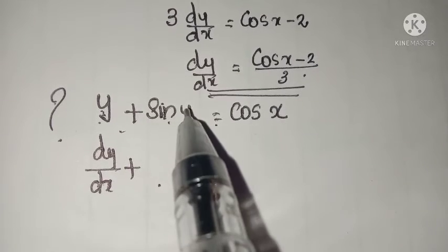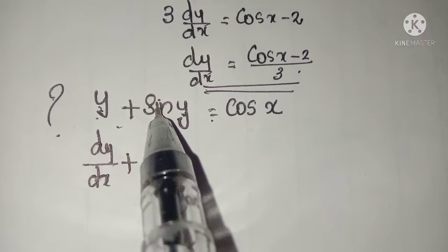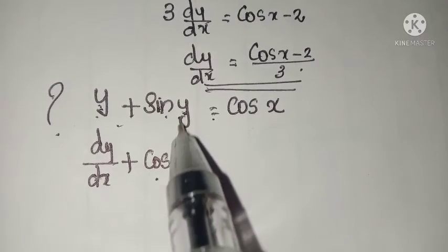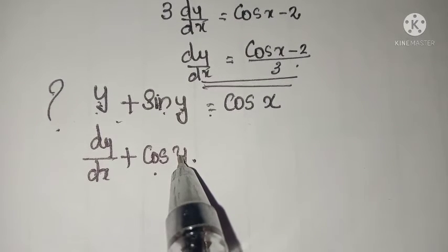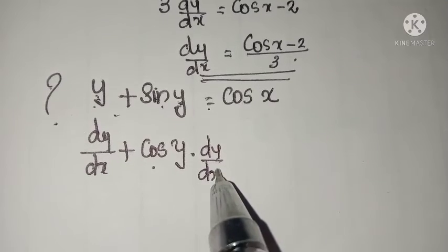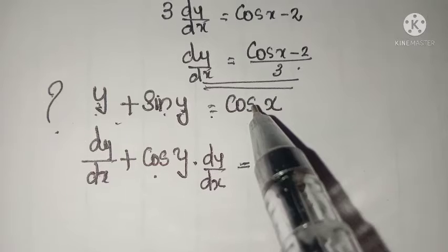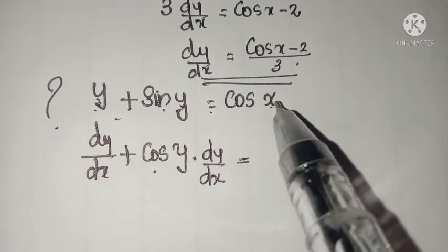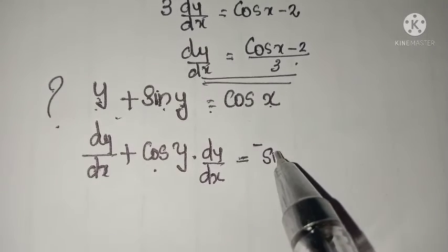Differentiating sin y with respect to x: derivative of sin y is cos y into derivative of y with respect to x, that is dy by dx. The right-hand side is in variable x, so we can directly differentiate: derivative of cos x is minus sin x.